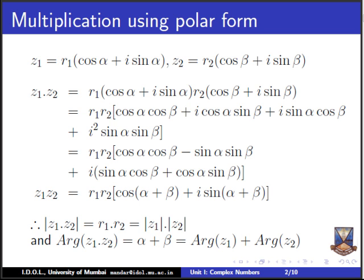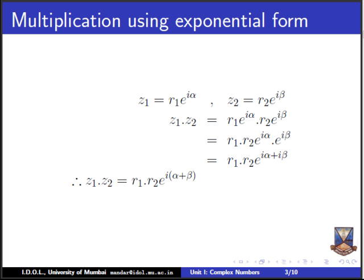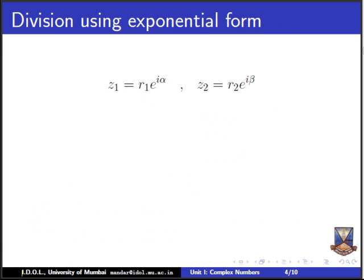Let us see the same multiplication in exponential form — it becomes more simple. If Z1 = R1·e^(iα) and Z2 = R2·e^(iβ), then Z1·Z2 = R1·R2·e^(i(α+β)), since we can bring the exponential powers together. We can very clearly see the modulus is R1·R2 and the argument is α + β — confirming that the modulus of the product is the product of the moduli and the argument is the sum of the arguments.